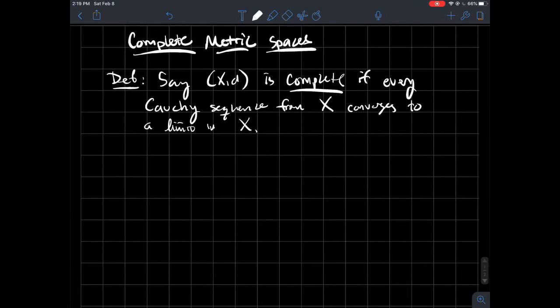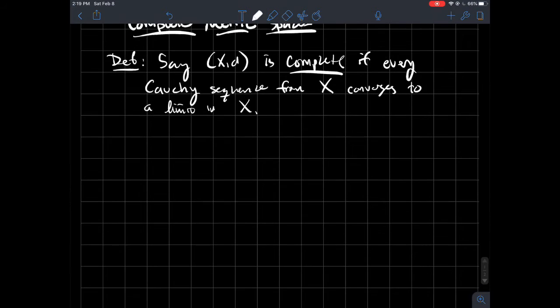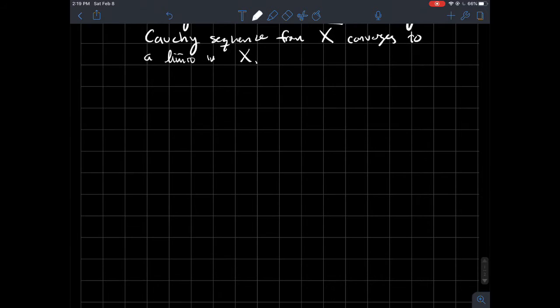If you didn't watch the Cauchy sequence video yet, that might be a good place to start. But I want to give you some examples of maybe a complete metric space versus an incomplete metric space.